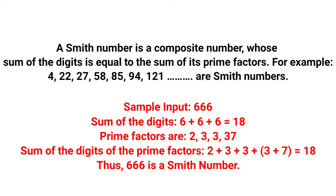A Smith number is a composite number whose sum of digits is equal to the sum of the digits of its prime factors. One example is 666 — the digit sum is 6+6+6=18. The prime factors of 666 are 2, 3, and 37, and the sum of their digits is 2+3+3+7 = 15... wait, that equals 18.